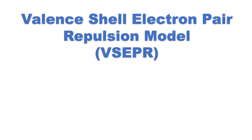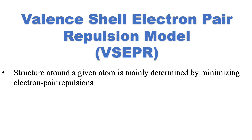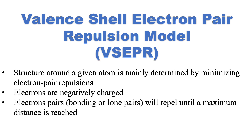The valence-shell electron pair repulsion model, also referred to as VSEPR, is the simple concept that the structure around a given atom is mainly determined by minimizing electron pair repulsions. Recall, electrons are negatively charged. Electron pairs, whether bonding or lone pairs, will repel until a maximum distance is reached. These geometries are called electron pair geometries. In this video, we'll look at the basic electron pair geometries around a central atom in a molecule.